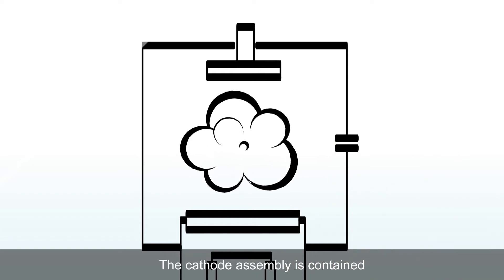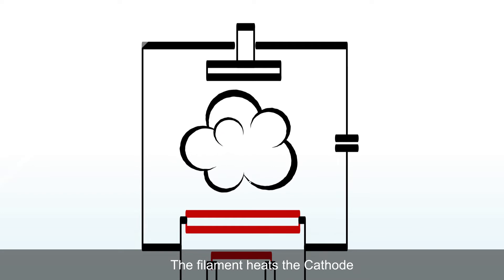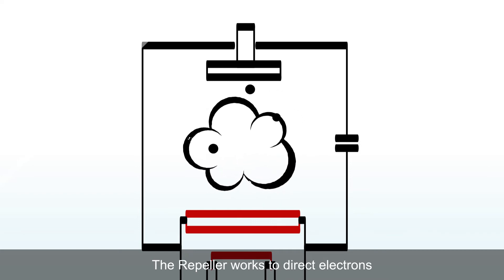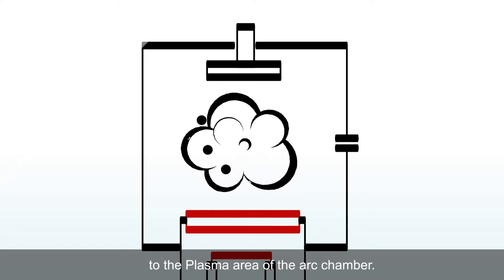The cathode assembly is contained in what is called the arc chamber. The filament heats the cathode and begins to emit electrons that travel around the arc chamber. The repeller works to direct electrons to the plasma area of the arc chamber.